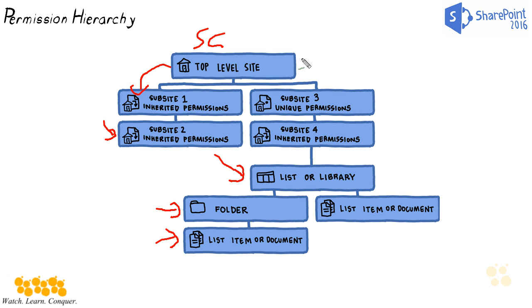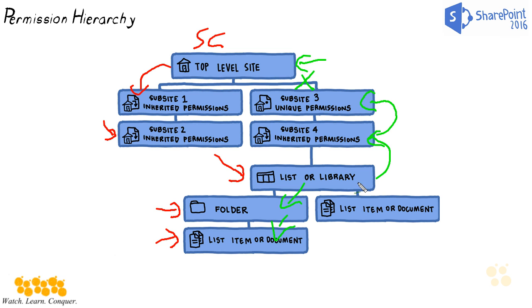On the right side, starting with a top-level site collection with default permissions, you can see that we've created unique permissions — we've actually broken the inheritance, so we're no longer inheriting permissions from the site collection level. Sub site four is now inheriting the permissions defined at sub site three, which means the list and library inherits from sub site four. Within there we have our folder, and within there we have list items and documents. If there's no folder, every list item or document inherits from the list or library.